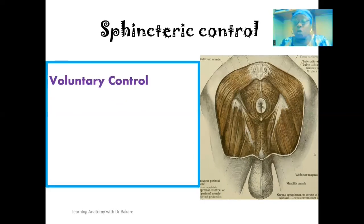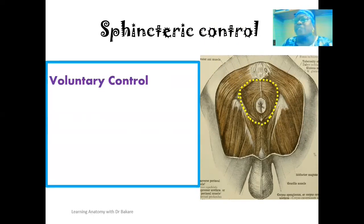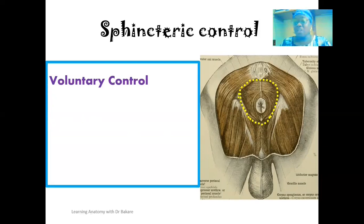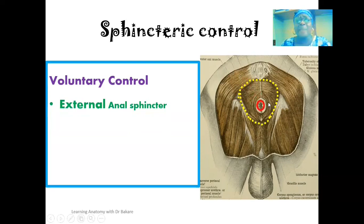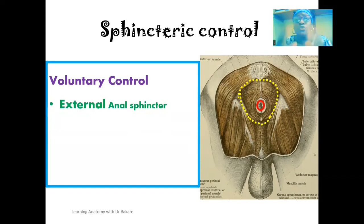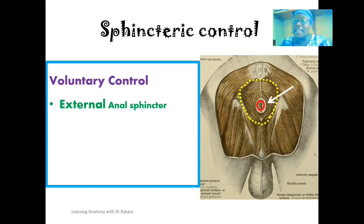The next importance is sphincteric control — the pelvic floor provides voluntary control over the sphincters around it. Looking at this image, the region carved out in dotted yellow is the pelvic floor, made up of a number of muscles whose fibers run in specific patterns. For the external anal sphincter, highlighted here in red, the fibers of the pelvic floor run around its circumference, helping to guide and control the opening and closing of this sphincter.